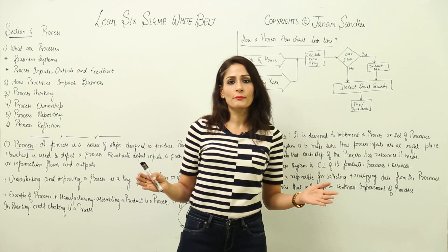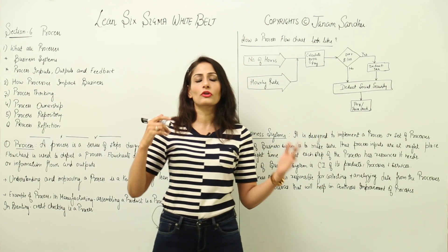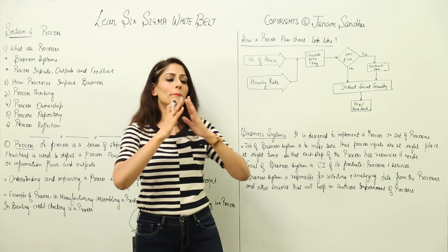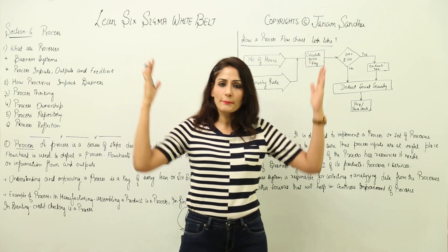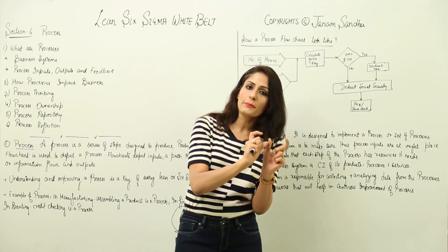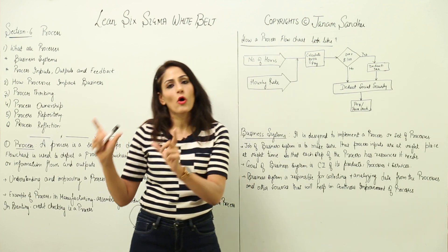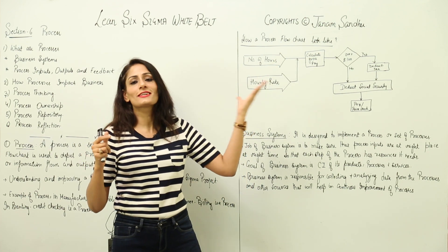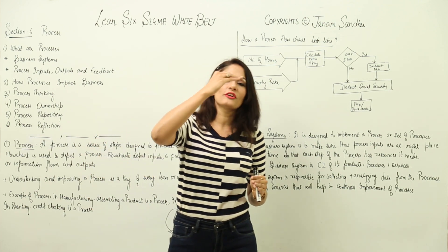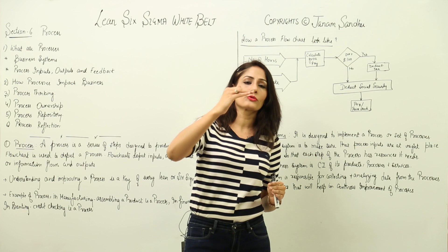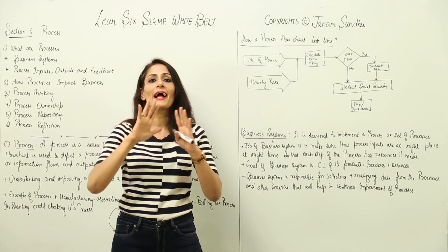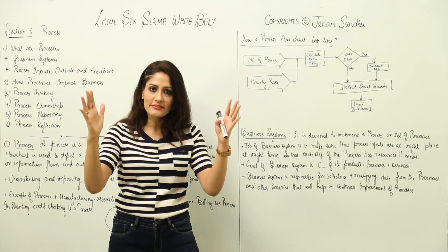This is how a simple flow chart looks, and this is how value stream maps look in your companies or workplace — though they would be very large if the processes are huge. They can be simple or complicated, but the basic idea is the same: they just break down the process into sub-processes and steps so we can understand what is going on.